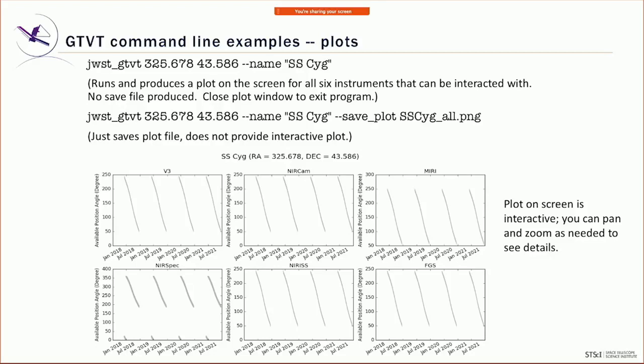Here's the general tool. There's the simplest form of the command line — in this case for SS Cygni, a cataclysmic variable star. By default you get all six plots to your screen, or you can send them to a file. You can restrict it to just one instrument if you want. These plots show the available position angle as a function of time over several years, and you can see the pattern repeats.